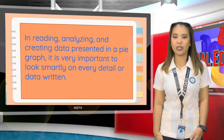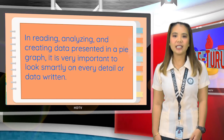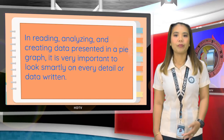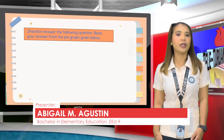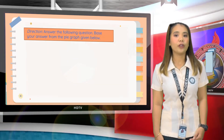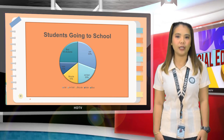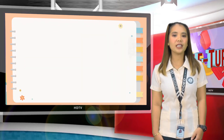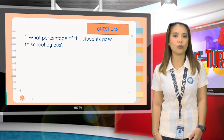Do you have any questions about our topic? If none, I will give you an individual activity and let us see if you really understand our lesson. Get one whole sheet of paper. Direction: Answer the following questions. Base your answer from the pie graph given below. The following pie graph shows the way a group of students come to school in the morning. Use the information to answer the questions. What percentage of the students go to school by bus? The students going to school by bus is 25%.